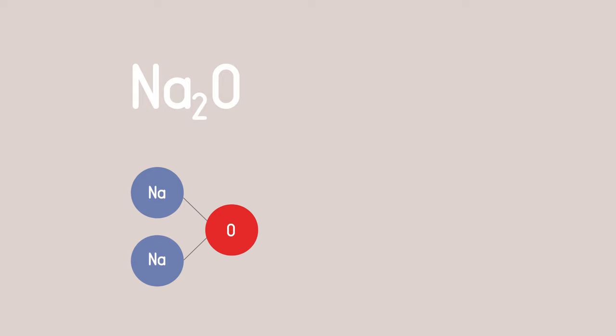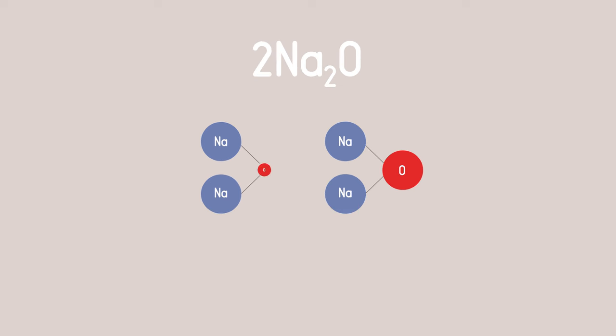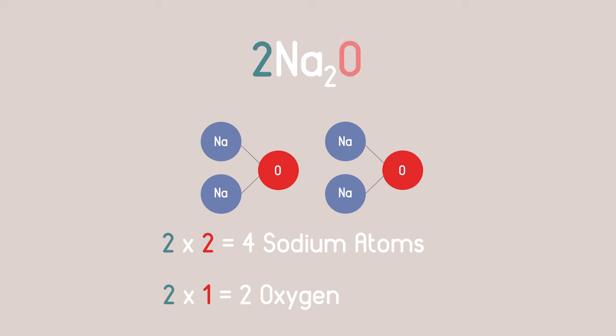So Na2O has two sodium atoms and one oxygen atom, whilst SnO2 has one tin atom and two oxygen atoms. If you have two Na2O, you have two times two sodium atoms—that's four sodium atoms—but you only have two times one oxygen atoms.